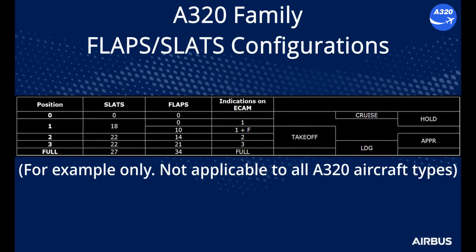As provided in the FCOM, a table illustrates the links between the entry point — that is the flap lever — and the angular position of the slats or flaps. This table is available in the FCOM for most Airbus aircraft, more specifically in the flaps and slats subsection of the flight controls chapter. For the single aisle family, slats angular positions are the same when the flaps lever position is at 2 or 3, corresponding to an angular position of 22 degrees.